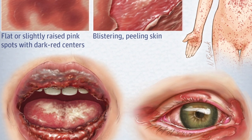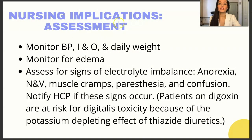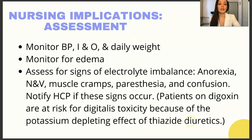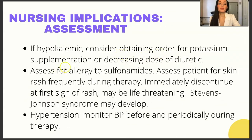Nursing implications for assessment: monitor blood pressure, intake and output, and daily weight. Monitor for edema and assess for signs of electrolyte imbalance, which include anorexia, nausea, vomiting, muscle cramps, paresthesia (tingling), and confusion. Always notify the healthcare provider if these signs occur. Patients on digoxin are at particular risk for digitalis toxicity due to the potassium-depleting effect of thiazide diuretics, so be very careful with that combination. If the patient is hypokalemic, consider obtaining an order for potassium supplementation or reducing the diuretic dose.